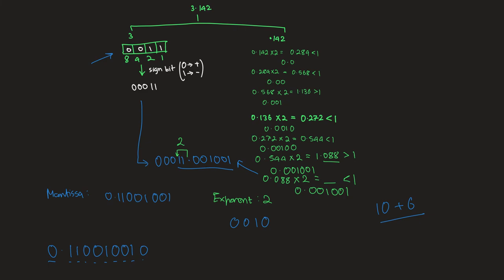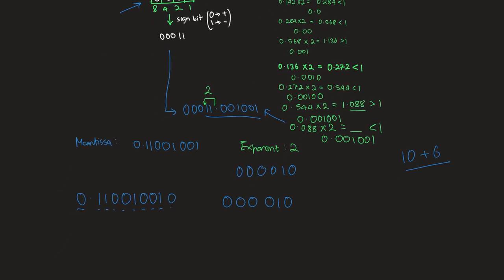Since we need the six bit exponent, we add zeros behind over here. One, two, three, four, five, six. So this would give us the six bit exponent.